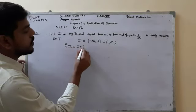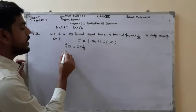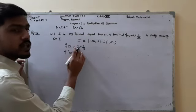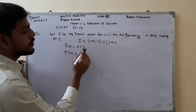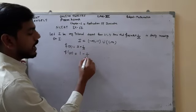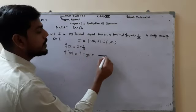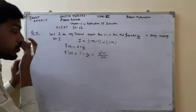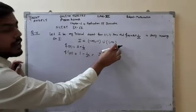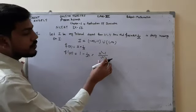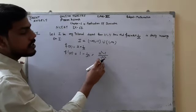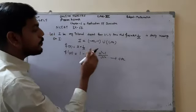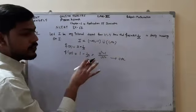For increasing or decreasing, we find the slope. For f(x) = x + 1/x, we find the differentiation: f'(x) equals the differentiation of x, which is 1, and the differentiation of 1/x, which is -1/x². Taking x² as the common denominator, it becomes (x² - 1)/x². For the denominator, x² is always positive because it is the square of a quantity.